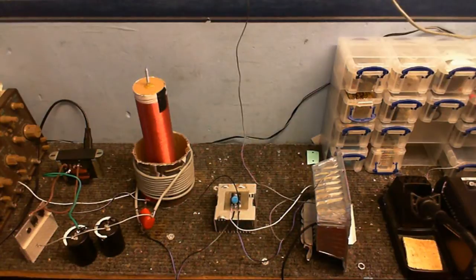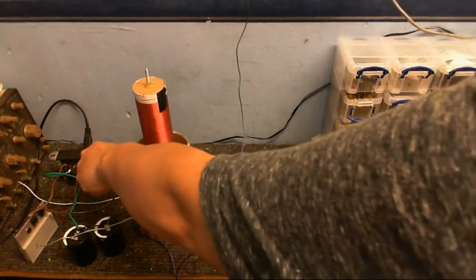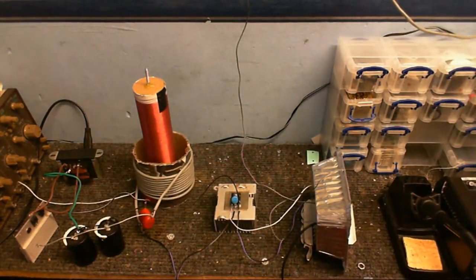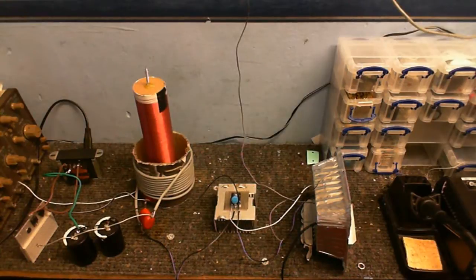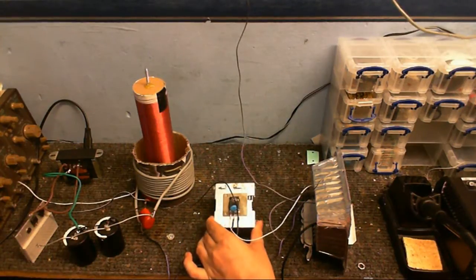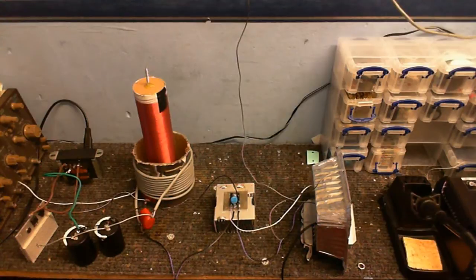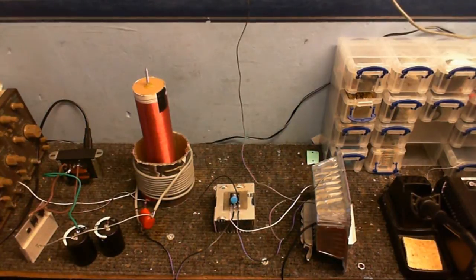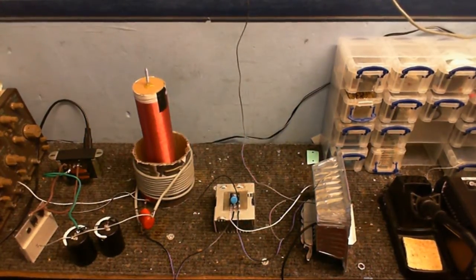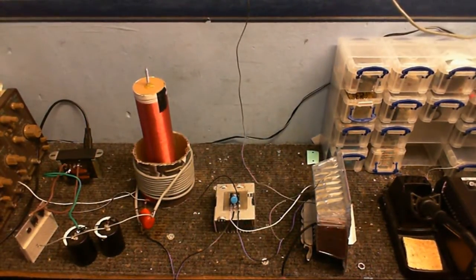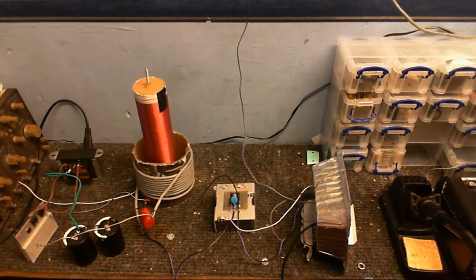So, this is attempt number two. Now, I have just swapped out that transformer for this one here, which doesn't provide as much voltage. But I think this will be good for a low power test. And I've also changed the MOSFET to an IRF-P260. I've got to be careful, because the thermal grease I use to attach it to the heatsink is conductive. So, I've got to keep that in mind. Make sure that's not... Okay, that looks good. It's not touching anything.